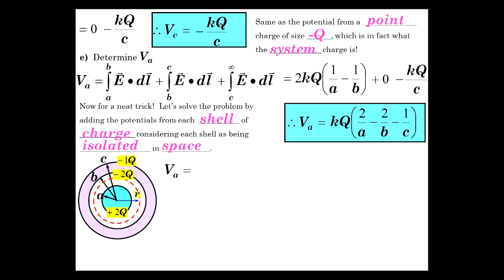So what's V_a? V_a is 2kQ over a minus 2kQ over b, because you have this shell and I'm going to add that potential that adds to the potential at a, and then the potential from this spherical shell of charge, minus kQ over c, which gives us the same result. So that can be a helpful shortcut path to the answer here.